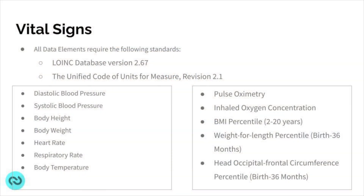Let's take a look at another one. For vital signs, there is a significant number of data elements in the data class — vital signs being one of the larger ones, along with clinical notes. For vital signs, the data elements are going to follow the LOINC database version 2.6.7 and the Unified Code for Units of Measure revision 2.1.